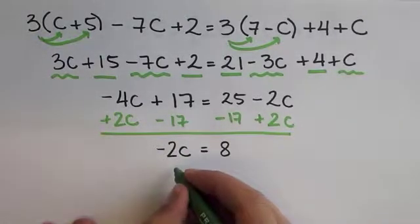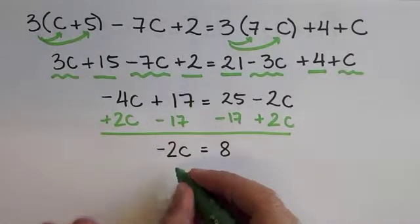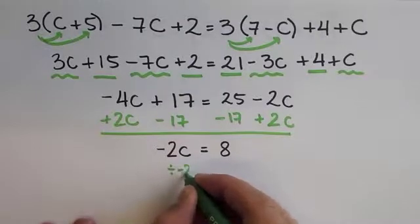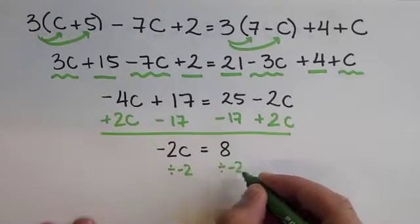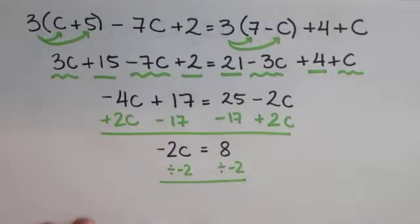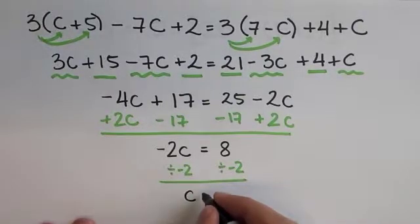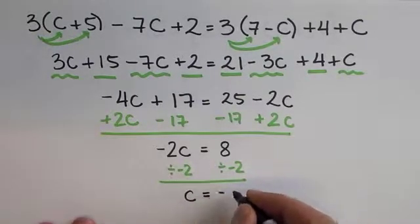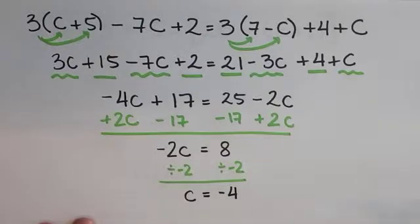Final step, remember you want to leave only c alone. So, you divide by negative 2 on both sides. When this happens, on the left side, you obtain c. On the right side, you obtain negative 4, which would be our result.